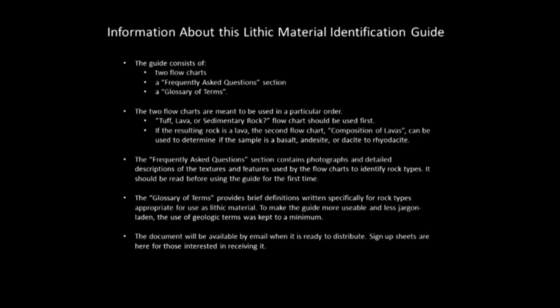The guide consists of three portions currently: two flowcharts, a frequently asked questions section, and a glossary of terms. The two flowcharts are meant to be used in a particular order — the tuff/lava or sedimentary rock flowchart first, and then if lava is one of your options, you use the composition of lavas flowchart to determine basalt, andesite, or dacite to rhyolite. The FAQ section contains photographs and detailed descriptions of textures and features used in the flowchart.